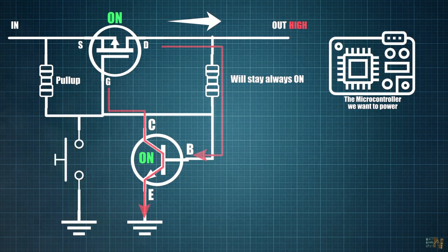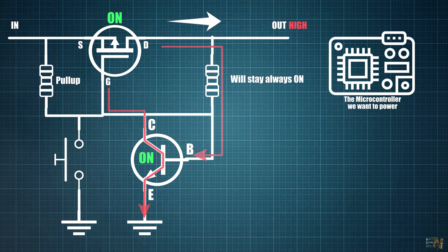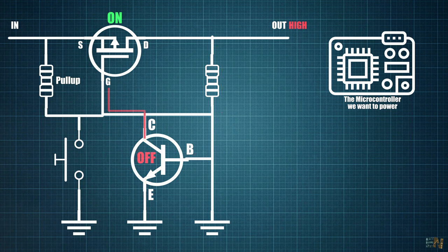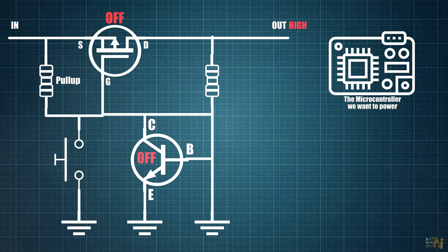But now we have a different problem. How to turn OFF this MOSFET? Well, all we have to do is to connect the base of the BJT transistor to ground and once again that will turn OFF and at the same time will disable the MOSFET.